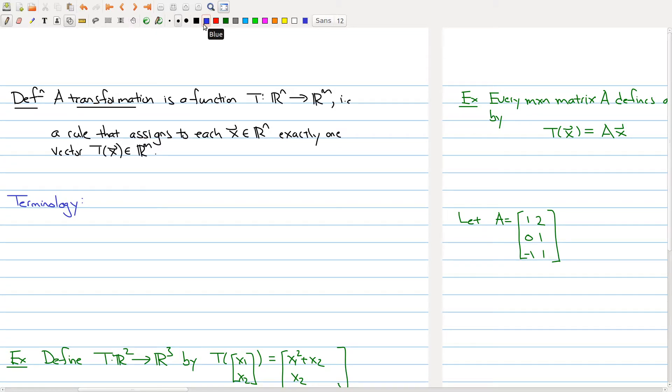Now, there's a bunch of terminology related to functions, and some of this you may already be familiar with. We call Rn the domain of T. This is where the input of our function comes from. The Rm is the codomain of T, where the vectors get sent. This is where they live at the end of our transformation. And we say that if x is inside of Rn, we call T of x the image of the vector x.